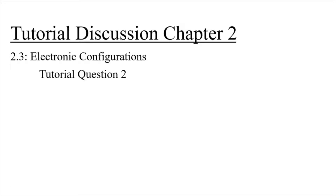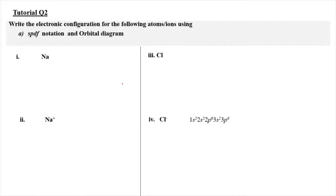Hi, assalamualaikum and a very good morning. So now we're going to do some tutorial discussion for Chapter 2, and we're going to focus on subject 2.3, electronic configuration tutorial question 2. We need to write the electronic configuration for the following atoms or ions using the SPDF notation as well as the orbital diagram.